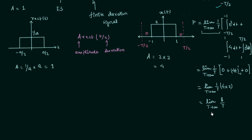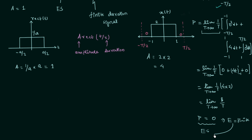When we apply the limit T→∞, we find average power P = 0. When average power P equals 0, the signal is an energy signal, because P = 0 implies total energy is some finite value, and when total energy is finite the signal is an energy signal.